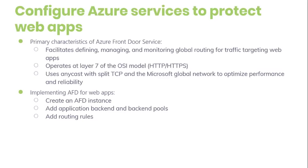With AFD, you can transform your multi-region consumer and enterprise applications into robust, high-performance, personalized modern applications, APIs, and content that reach a global audience with Azure. AFD works at Layer 7, or HTTP/HTTPS, and uses the Anycast protocol with TCP and Microsoft's global network for improving global connectivity. Based on your routing method selected in the configuration, you can ensure that AFD is routing your client requests to the fastest and most available application back-end.